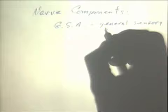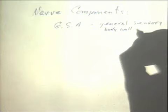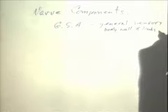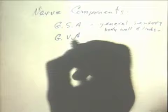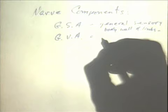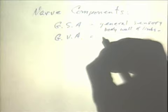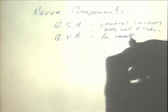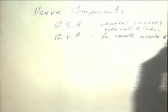GSA is from the body wall and limbs. As opposed to, for example, general visceral afferent (GVA), which is information coming in from smooth muscle areas, mostly, and glands.